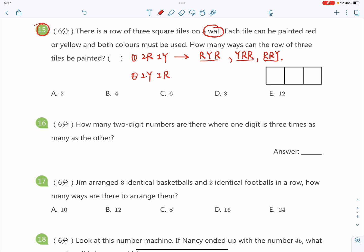That means for the two yellow and one red, you got three ways as well. Let me show you those three ways. It could be yellow, red, yellow, or red, yellow, yellow, or yellow, yellow, red.